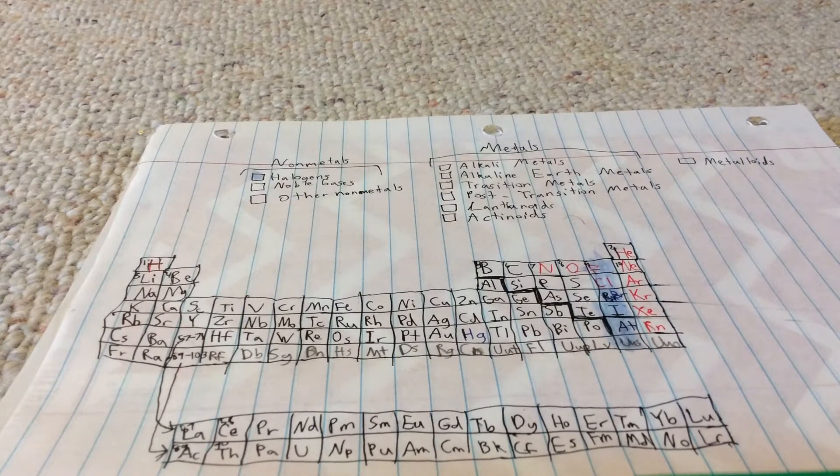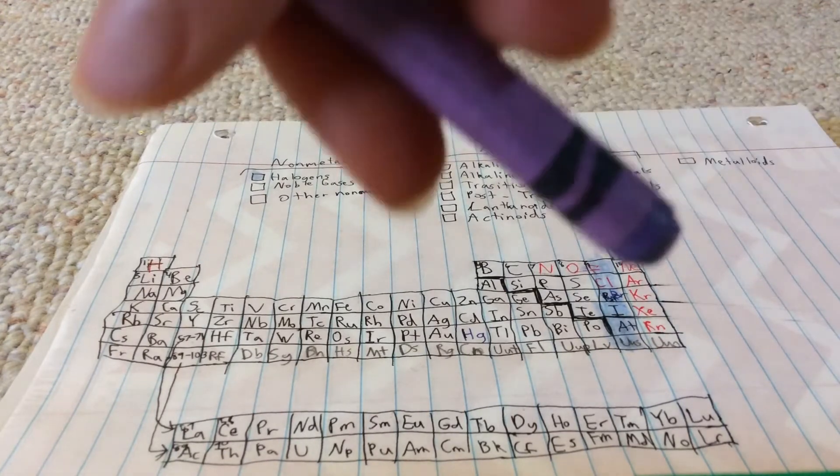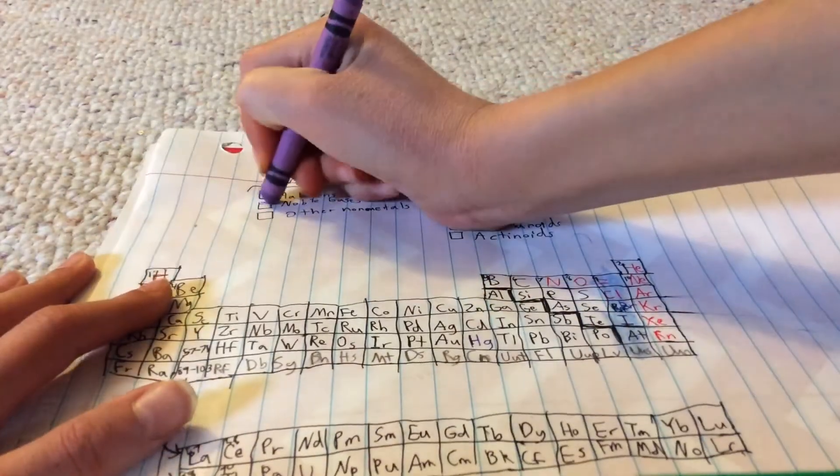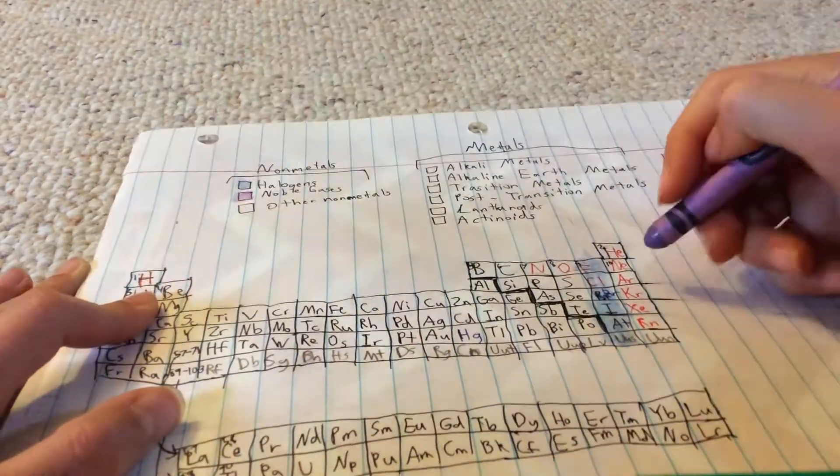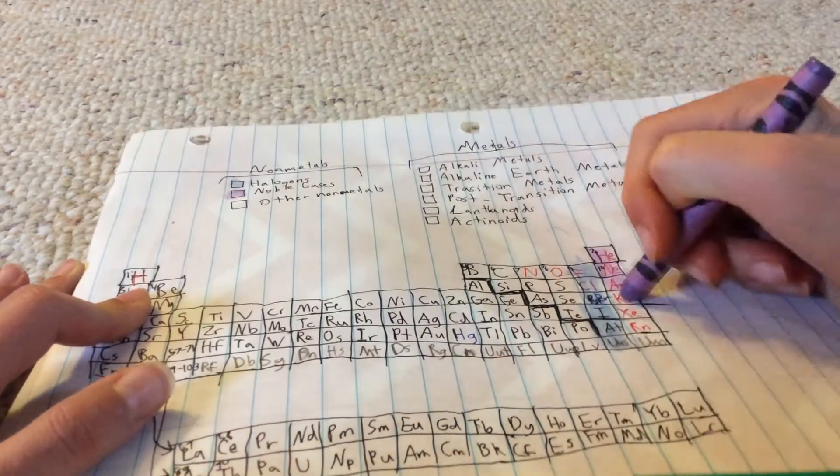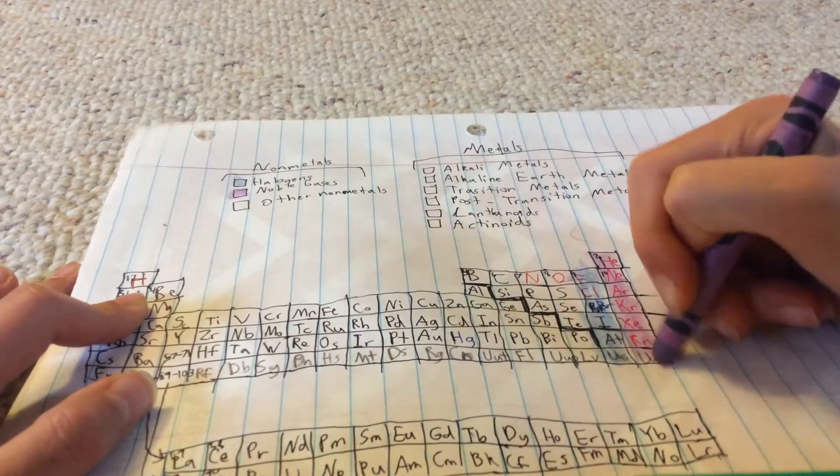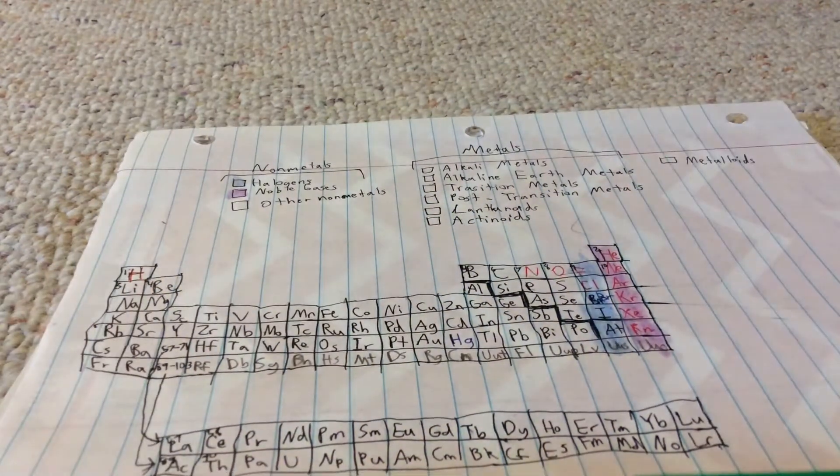That's okay. Next one is noble gases, which I'm gonna do wisteria. The noble gases are this family, family number 18, as you can see.